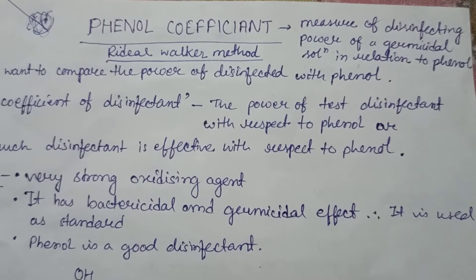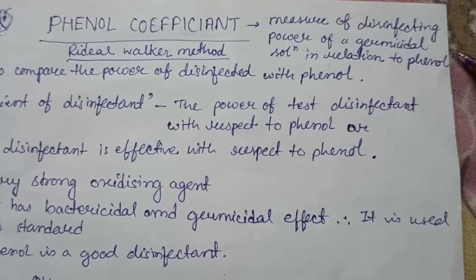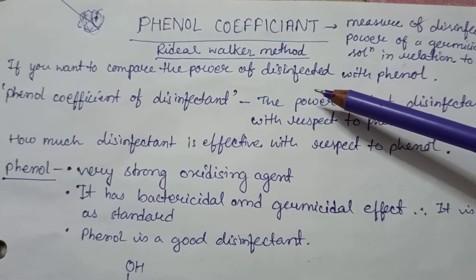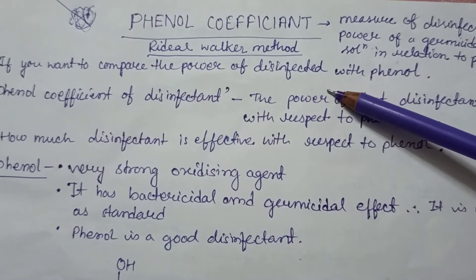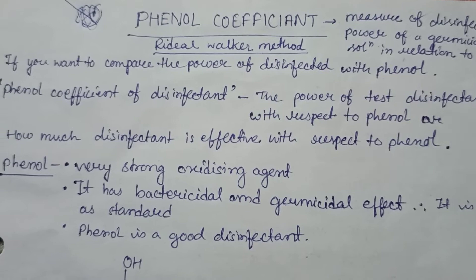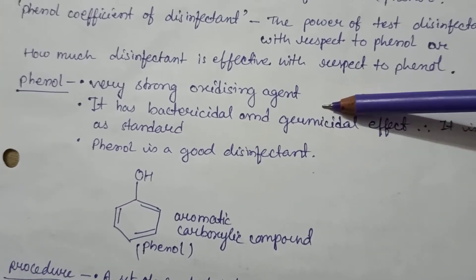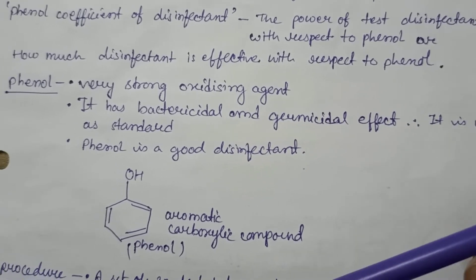The phenol coefficient or Riddle-Walker method is the measure of disinfecting power of a germicidal solution in relation to phenol. Here we can determine the power of disinfectant in relation to phenol. Phenol is a very strong oxidizing agent and it has a bactericidal and germicidal effect.